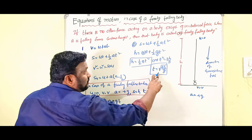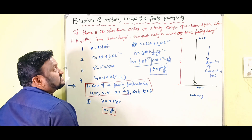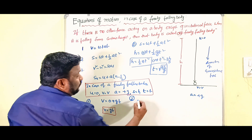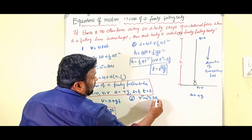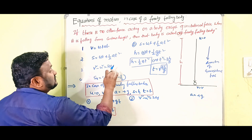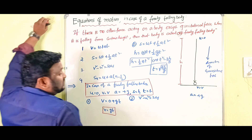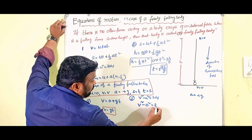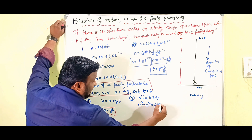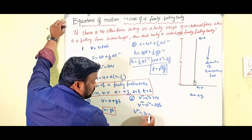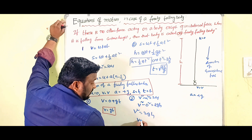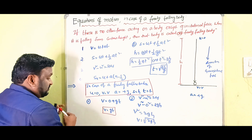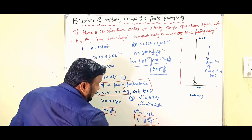So t equals under root of 2h by g — this is the second equation. Third equation: v squared minus u squared equals 2as. Here u equals 0, a equals g, and s equals h. So v squared equals 2gh, and therefore v equals the square root of 2gh. This is the third equation.